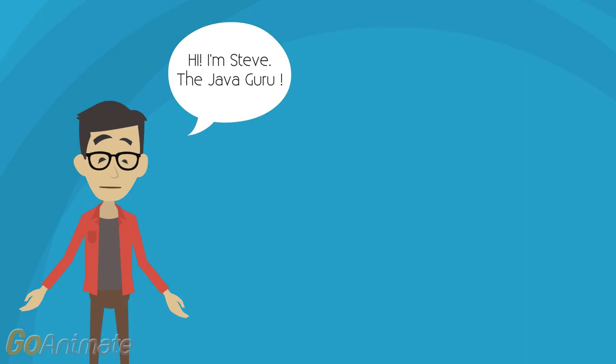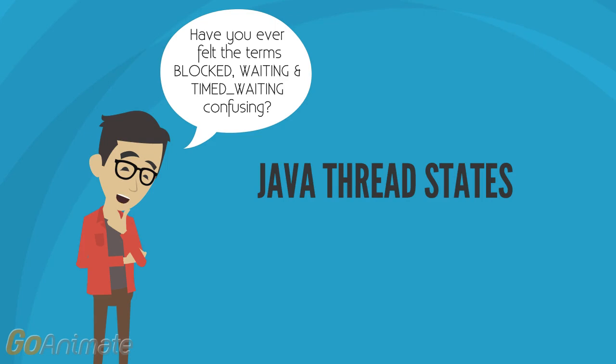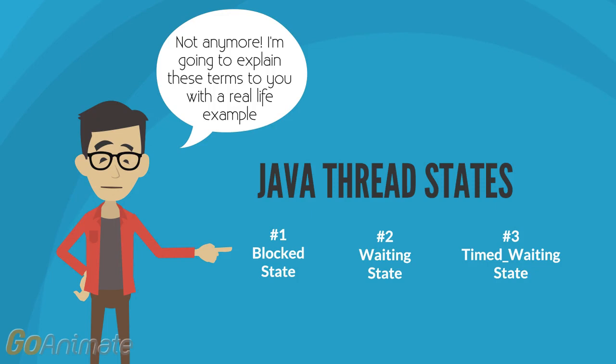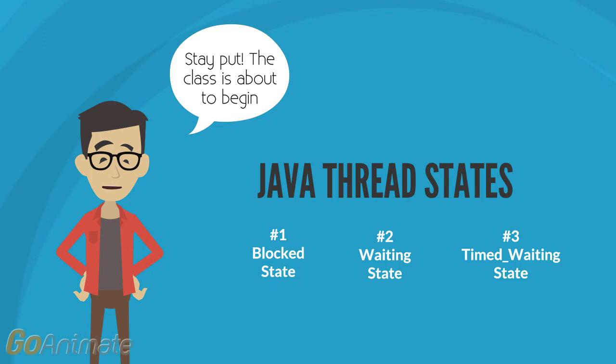Hi, I'm Steve, the Java Guru. I'm going to explain the different thread states in Java. Have you ever found the terms blocked, waiting, and timed waiting confusing? Not anymore. I'm going to explain these terms to you with a real-life example. Stay put — the class is about to begin.